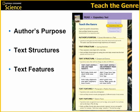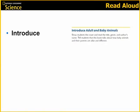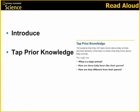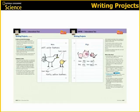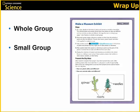In teaching the genre, you will cover the author's purpose, one or two text structures, and a text feature. The read aloud begins with an introduction and an opportunity to tap the students' prior knowledge. Then instruction is provided for both reading purposes. When the reading is complete, students begin their writing projects — there are a few options to choose from. Finally, it's time to wrap up the unit, and this will be either a whole group or small group activity.